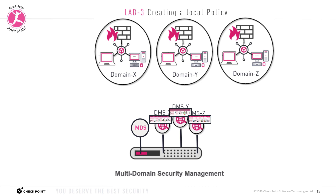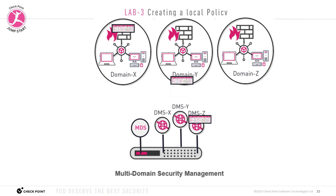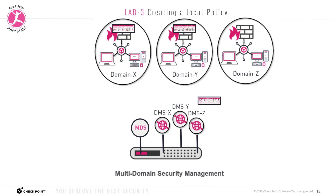The local security policy on DMSX will be installed on domain X security gateways. Then we'll create a DMSY security policy and install it on domain Y security gateways. Finally, we'll also create a security policy for DMSZ and install it on the security gateway for domain Z. Let me show you what I mean.